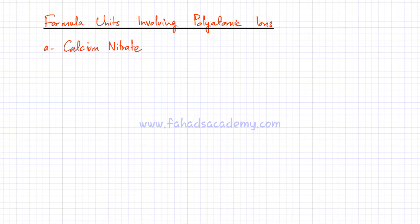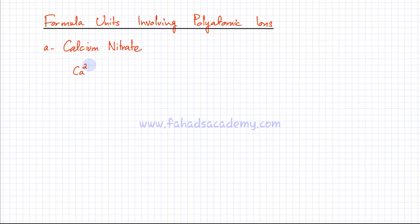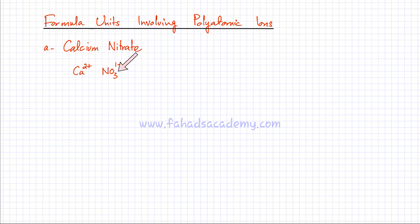The first ionic compound we're going to write the formula unit for is calcium nitrate. Calcium is in group 2, and group 2 has a charge of 2+. Nitrate is NO3 and the charge is 1-. Remember, nitrate is always going to be NO3 — don't convert it into NO2, NO6, or NO9. It has to remain NO3.